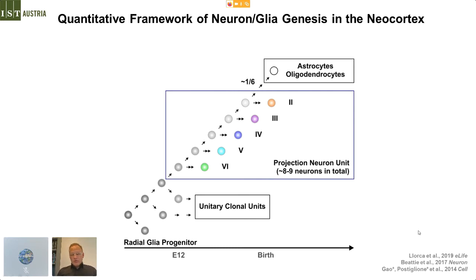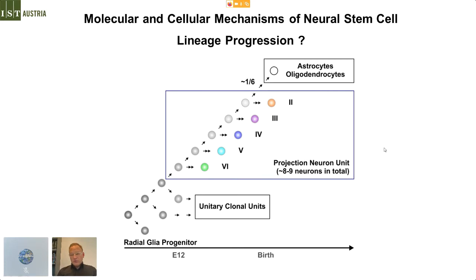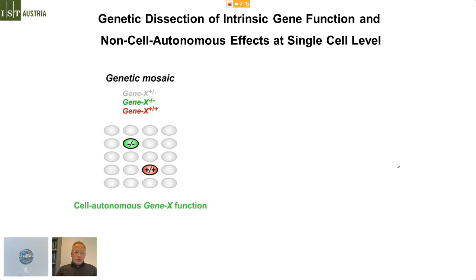Given we have such a quantitative framework, we are very interested in what are the molecular and cellular mechanisms that actually drive this lineage progression — in other words, how you switch from symmetric to asymmetric division, and how you temporally control the subsequent production of different neuron types and also glial cells. For that, we take candidate gene approaches where we take a gene X, introduce a mutation specifically in the green cells, compare the phenotype to wild-type red cells, and thereby infer cell autonomous gene function. Because this is done very sparsely or even clonally, the background is normal — to be precise, it's heterozygous — but if the gene is not dosage sensitive, that will work well.